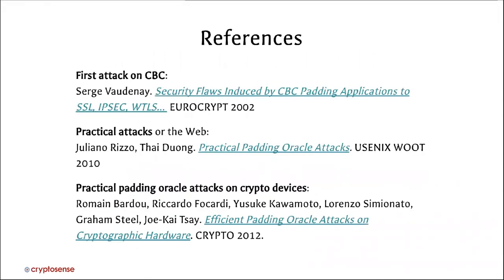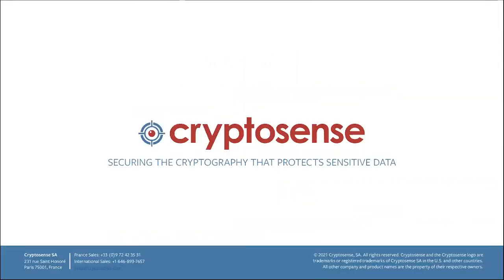A few references for those wanting to go deeper: the CBC padding oracle attack first came to light in a paper by a Swiss professor of cryptography. It came back to prominence in 2010 after a paper showing it could be applied to many real systems thought to have been fixed back in 2002. The speaker was involved in a 2012 paper at the IACR Crypto conference explaining how padding oracle attacks — for both RSA and CBC — can be found on real cryptographic devices, with improvements that reduce the Million Message Attack to around 10,000 messages.